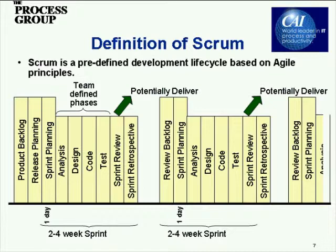Slide 7 is a quick definition of Scrum for people that are unfamiliar. It starts on the far left with something called the product backlog, which is essentially a requirements list. If you had requirements — typically called user stories in the Scrum or Agile world — they are one-line sentences describing from an end-user perspective what the system should do. For example, 'As an end user, I would like to access this data in this format.' By breaking down system functionality into user-centric one-line items, you build up what is called a product backlog.